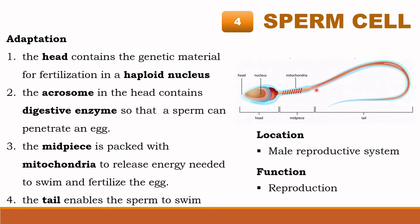The tail region enables the sperm to swim. The sperm cell is found in the male reproductive system, and its function is reproduction.